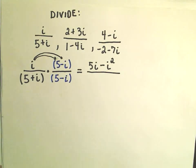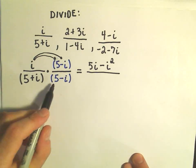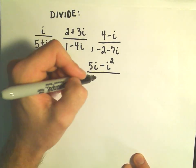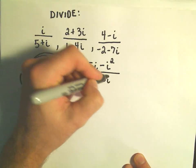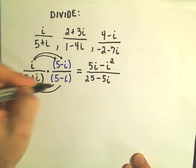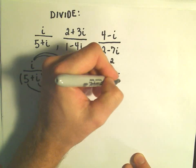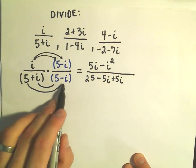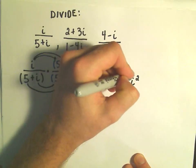In the denominator, if we distribute things out, we have 5 times 5, which is 25. We take 5 times negative i, we get minus 5i. On the inside, we get i times 5, which is positive 5i. And then when we take positive i times negative i, we're going to get negative i squared.